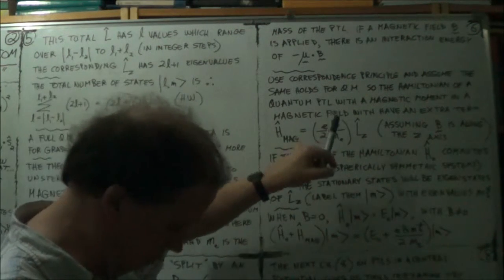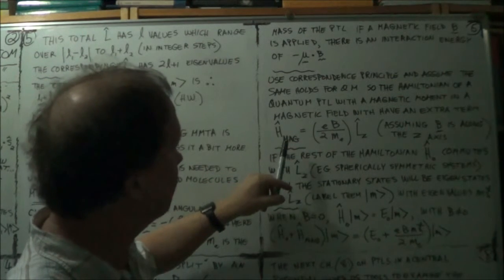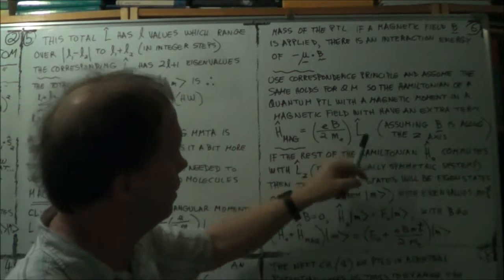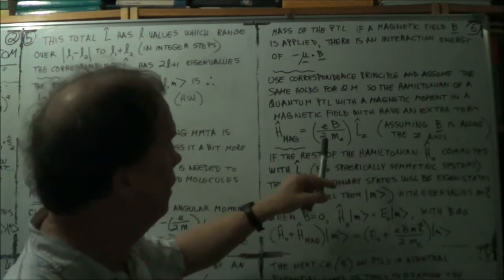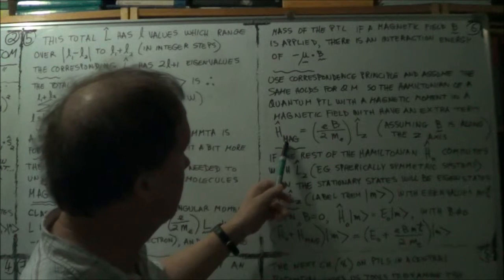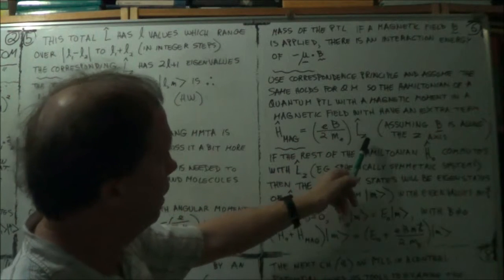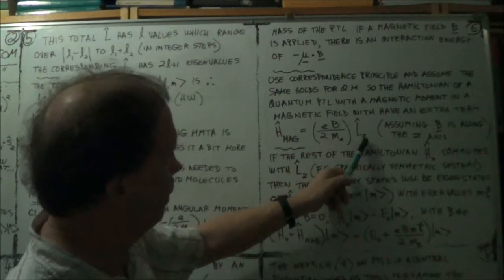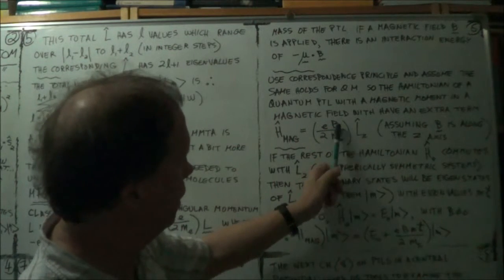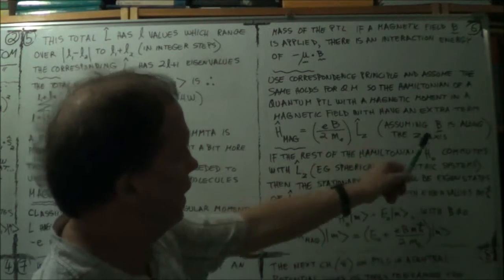As soon as you switch on the magnetic field, you get like an extra term in the Hamiltonian. Think of it as like a potential, an extra potential term, a potential energy term. And that extra term in the Hamiltonian, we call it H_mag, due to the magnetic field. And now the angular momentum component is hatted, it's an operator. And let's assume that the magnetic field is oriented up the z-axis.